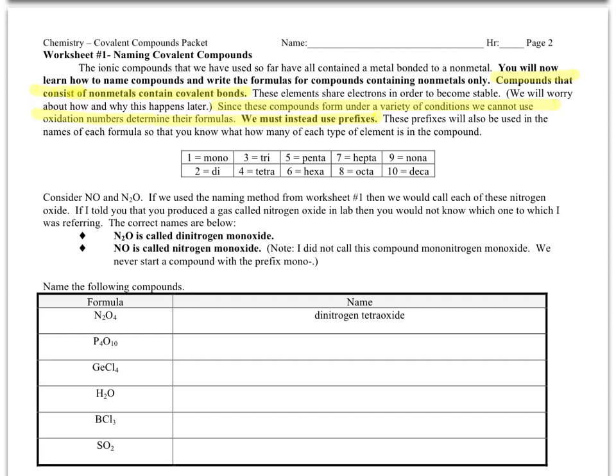The charges are not neutralizing. What we're going to use now instead are prefixes to tell us how many of each atom we have. These are the prefixes, which you don't need to memorize—they will be provided on tests and quizzes. Mono means one, di means two, and so on, all the way up to deca meaning ten.